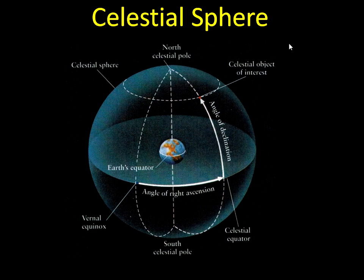So this concept of the celestial sphere, which we introduce in chapter two, is very important in both this chapter and the upcoming chapter three, when we include the moon. This is not something that's real, but it's a useful tool in astronomy. We are, of course, located here on Earth — this is where we observe the stars from.